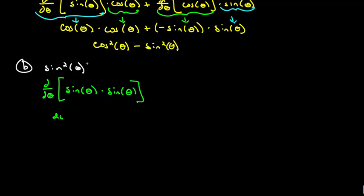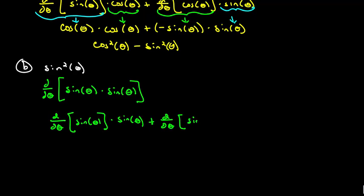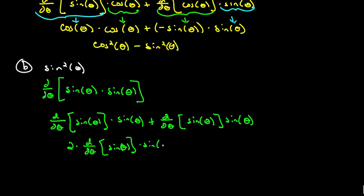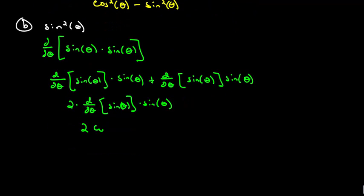Using the product rule, we take the derivative of the first function times the second function, then add the derivative of the second function times the first function. If you notice, I've got the same thing twice, so this is really 2 times d/dθ of sine theta, times sine theta. The derivative of sine theta is cosine theta, so this is 2 cosine theta times sine theta.